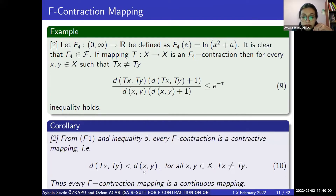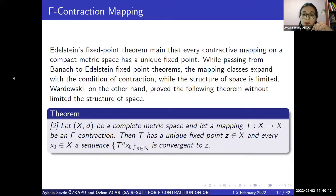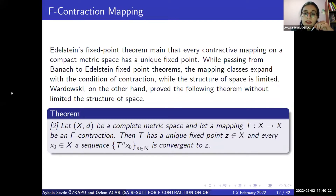We can give some examples of F-contraction: F₁(α) is this, F₂(α) is this, F₃(α) is this, F₄(α) is this. From F1 and inequality 5, every F-contraction is a contractive mapping as in condition 10. Thus, every F-contraction mapping is a continuous mapping.